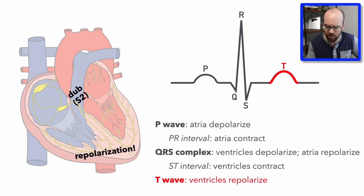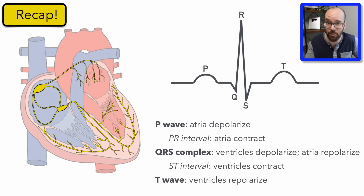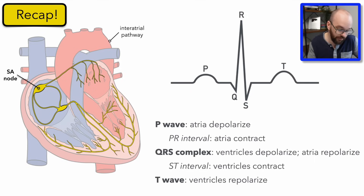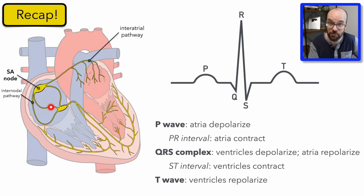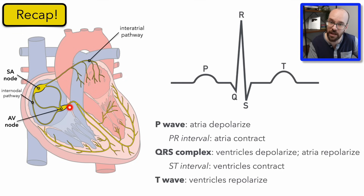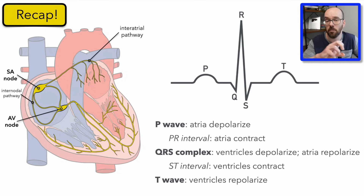All right, a lot going on in that process — let's do a quick recap. The sinoatrial node is where the signal starts. The interatrial pathway carries it to depolarize the left atrium. The internodal pathways carry it to depolarize the right atrium. The signal travels to the AV node where it is slowed down so the atria can finish contracting before the ventricles depolarize and contract.